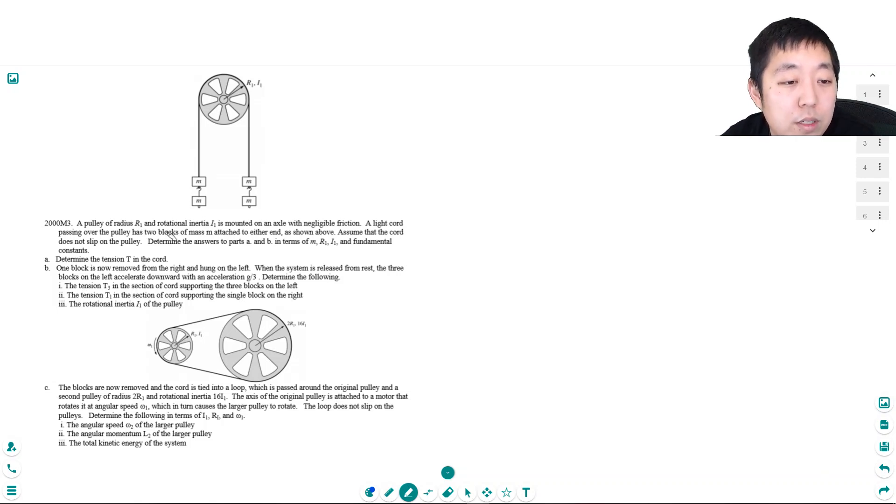So a pulley of radius R1 and rotational inertia I1 is mounted on the axle with negligible friction. A light cord is passing over the pulley has two blocks of mass M attached to either end as shown above. Assume the cord does not slip on the pulley. Determine the answers to part A and B in terms of M, R1, I1, and constants.